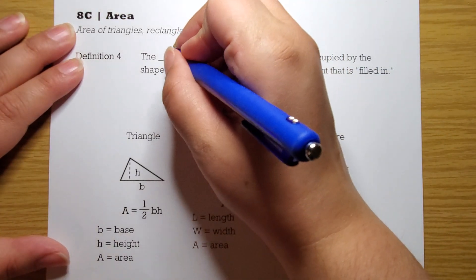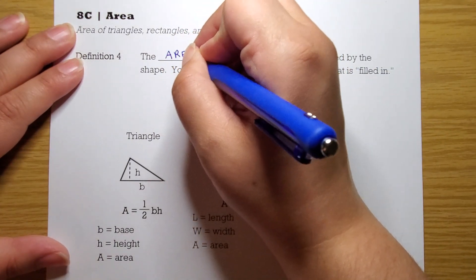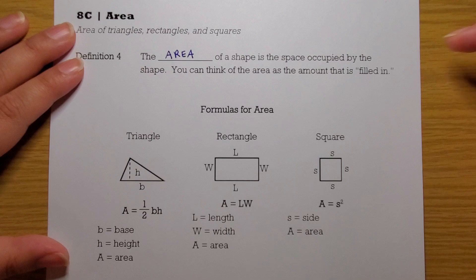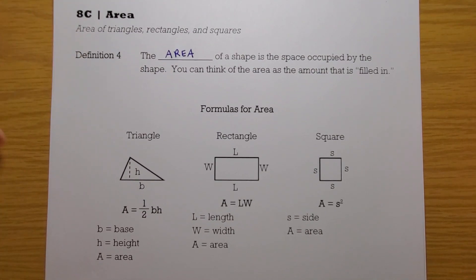The area of a shape is the space occupied by the shape. You can think of the area as the amount that is filled in. If you get an area rug, the area rug is covering the area that the rug is covering. Whatever space that rug covers, that's the area.